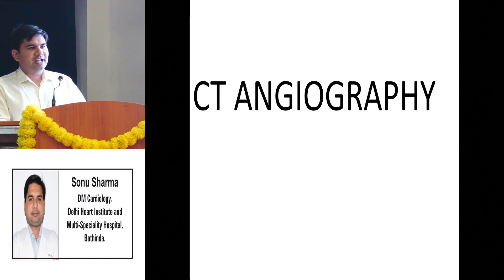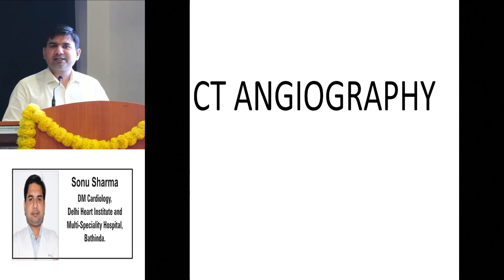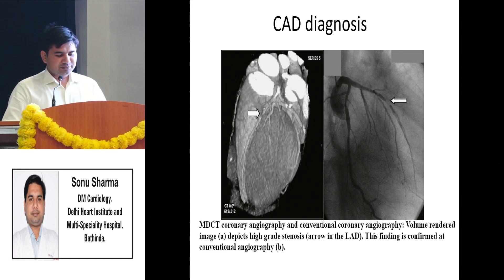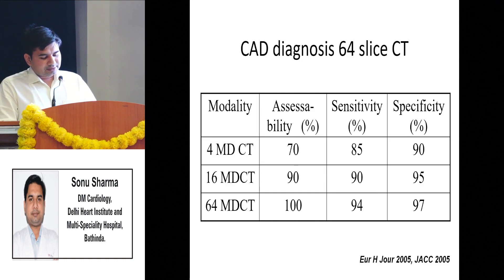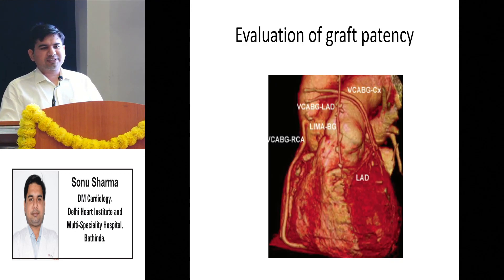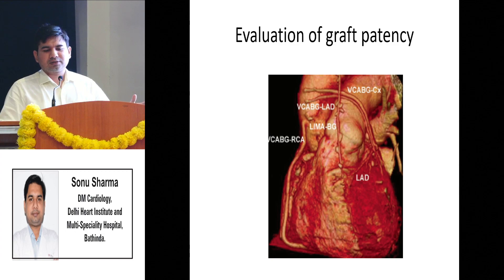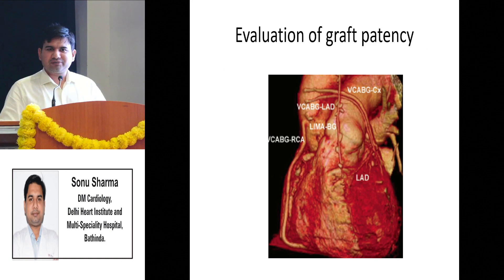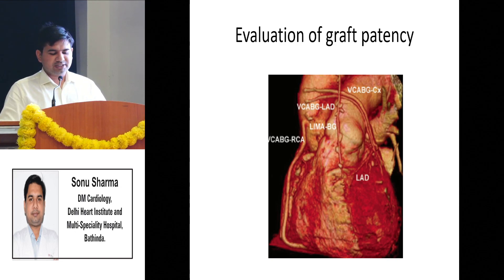We know angiography is the gold standard for diagnosing coronary artery disease, but now we have CT angiography. It can easily diagnose stenosis at a particular level. The sensitivity and specificity of 64-slice MDCT is around 94-97%. It is particularly useful because most post-bypass patients have lost their records - we don't know how many grafts were placed. With CT angiography we can easily define the various grafts and determine how many are working.